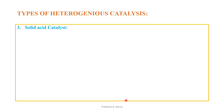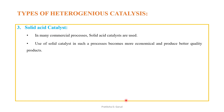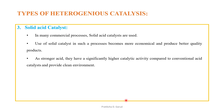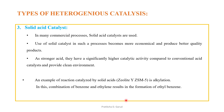The third type is solid acid catalysts, used in many commercial processes. They are more economical and produce better quality products. As stronger acids, they have significantly higher catalytic activity compared to conventional acid catalysts and provide a cleaner environment. An example of a reaction catalyzed by solid acids is the alkylation reaction, where benzene and ethylene combine to form ethylbenzene.